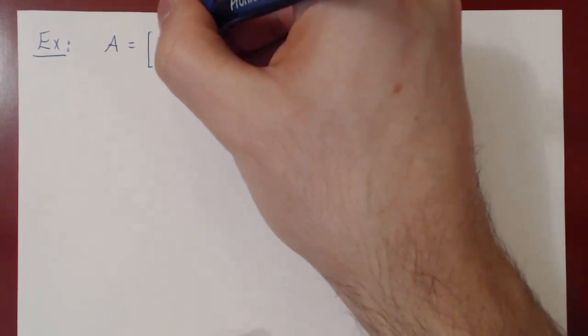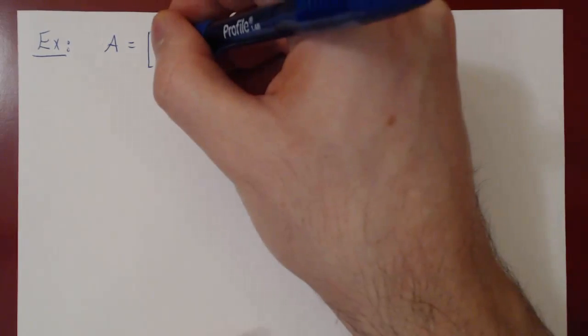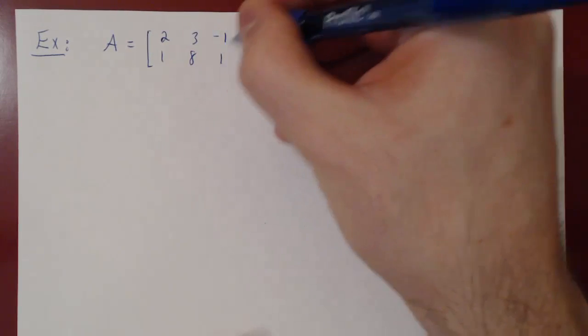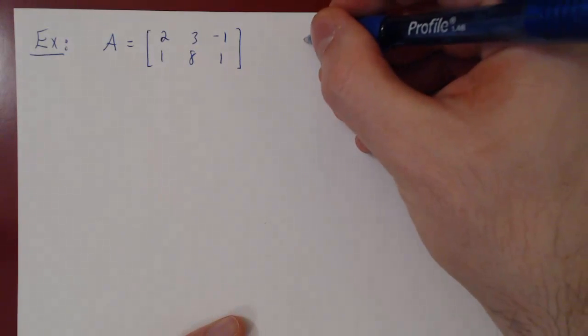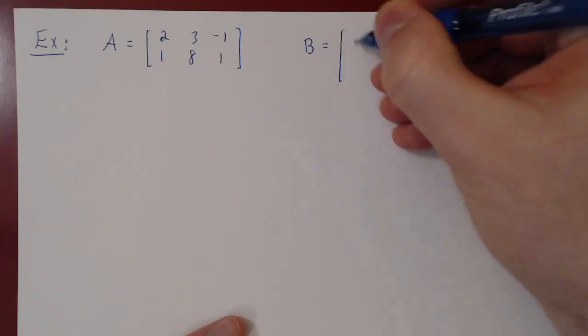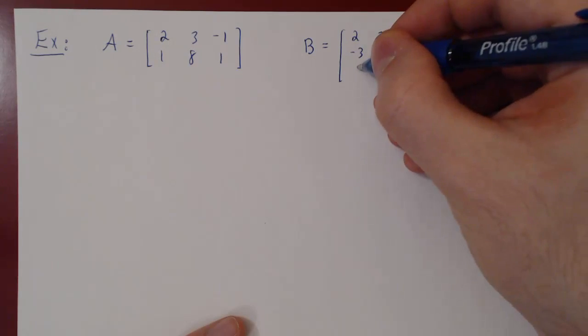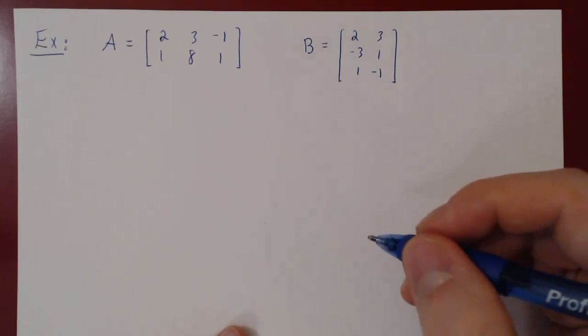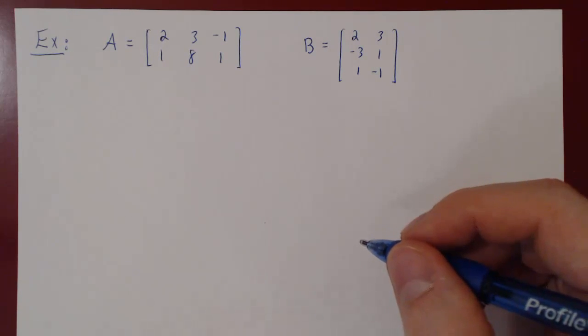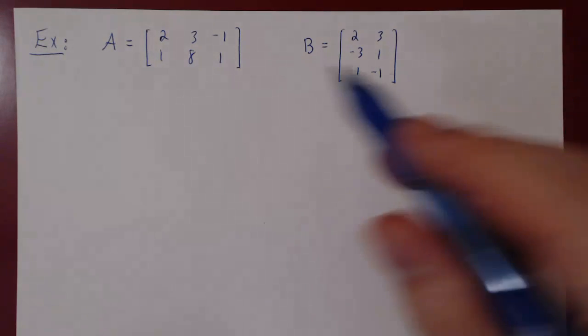Let's look at an example of this property to appreciate why it is not trivial, and this will bring us to the conclusion of our video. Suppose we take A to be a 2 by 3 matrix: 2, 3, negative 1, 1, 8, 1. And let B be a 3 by 2 matrix: 2, 3, negative 3, 1, 1, negative 1. Let's compute AB and then BA and look at their traces.